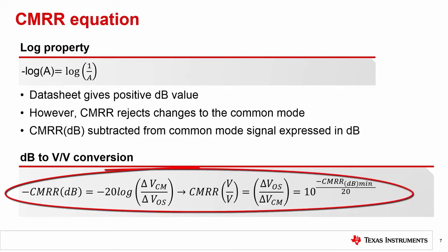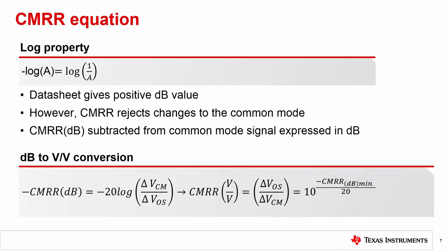With this in mind, we can convert the logarithmic dB value provided in the datasheet to a linear volts per volt ratio, which will be helpful for error calculations. In our conversion, you see that we use the minimum CMRR spec. This is because a smaller CMRR value in dB corresponds to a weaker rejection.